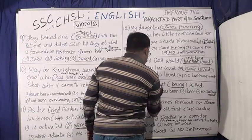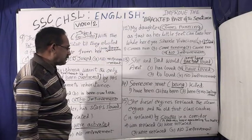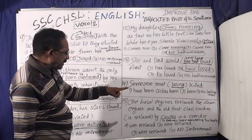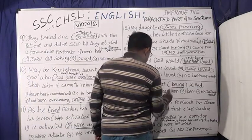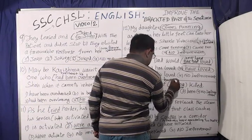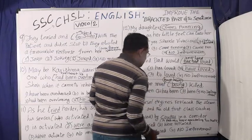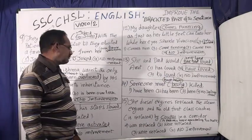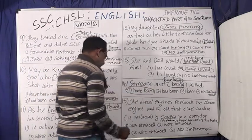Question fourteen: Someone must — bracket part — 'being killed.' This construction 'must being' is wrong. After 'must,' the auxiliary verb sequence must be 'must have been.' So the correct answer is 'must have been killed,' which is a passive construction. The answer is option number one: 'must have been killed.'